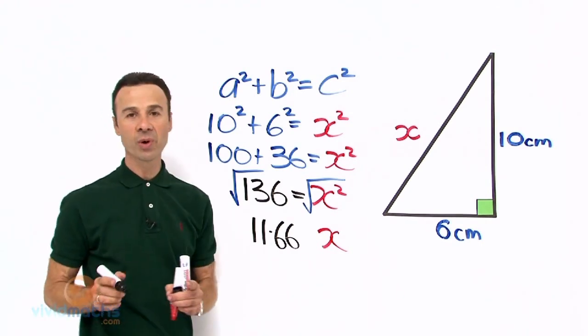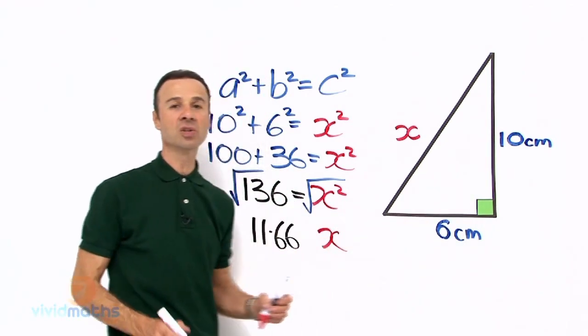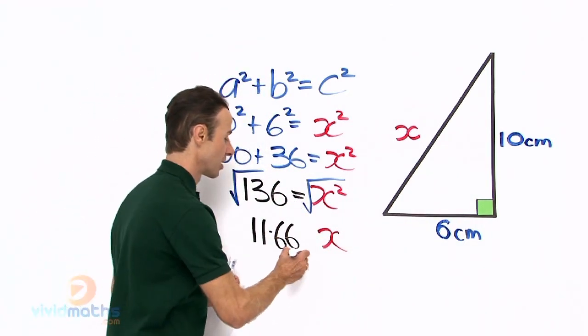Now always remember, if they give you units in your diagram, 6 cm, 10 cm, we always write in the units, so that is going to be 11.66 cm.